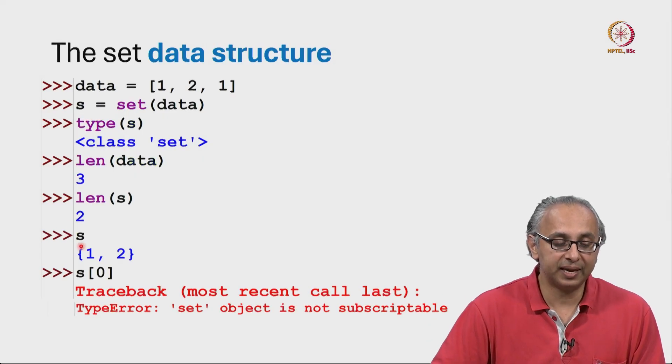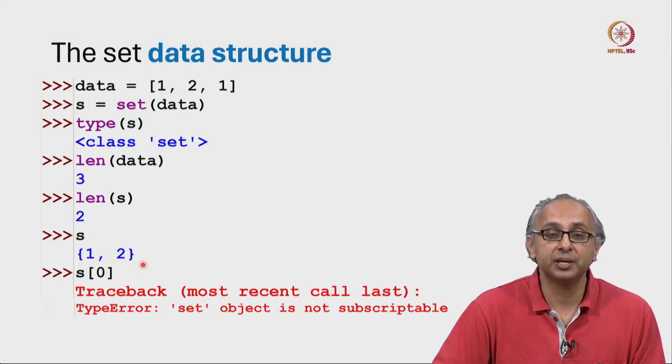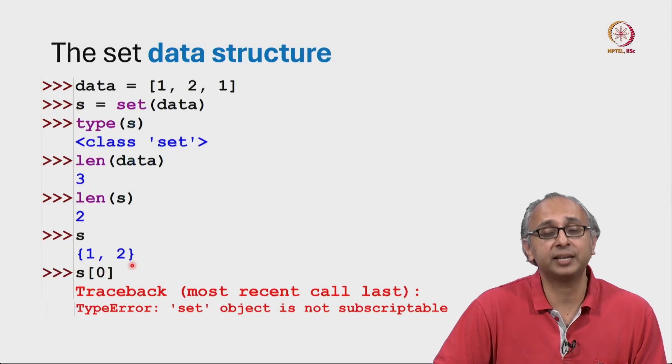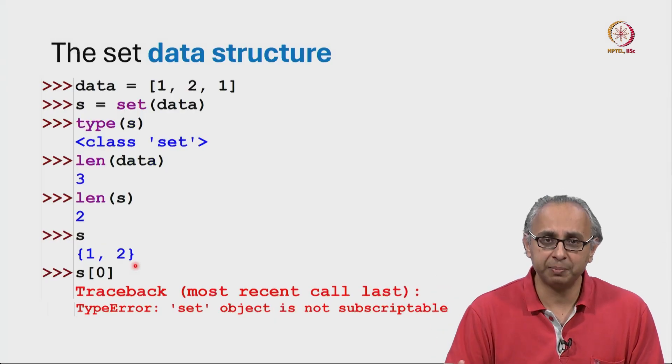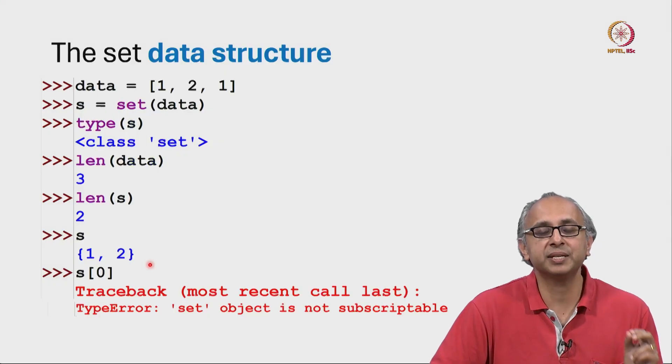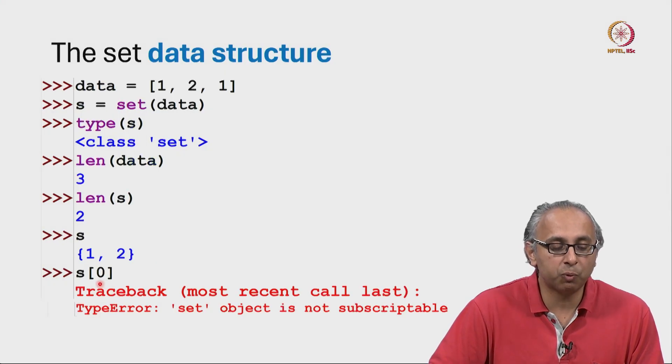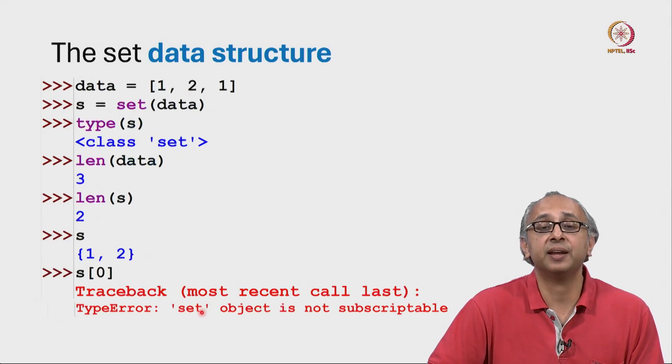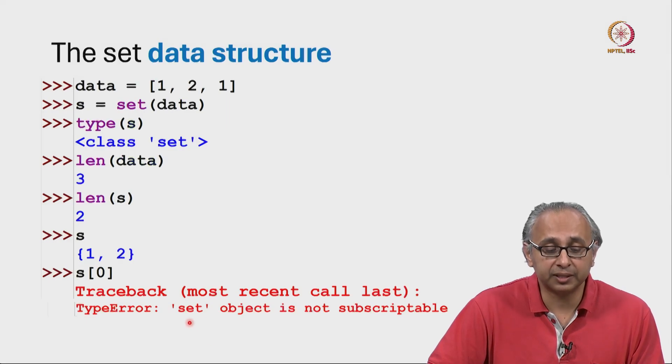Now, this set S has these 2 items. We use the curly bracket notation just like you would have seen in your mathematics class to indicate the elements of the set. But please remember that the items in a set cannot be indexed. So, for example, if you try and say well what is the 0th item in this set hoping to get the answer 1, you would in fact get an error message and it would tell you that the set object is not subscriptable meaning you cannot use this kind of notation.